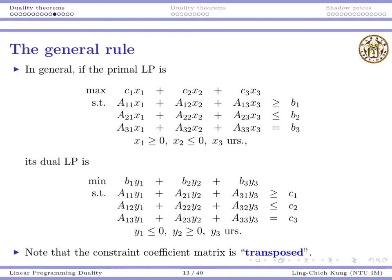In general, if we have a primal program with all kinds of constraints and all kinds of variables, then the dual variables can be formulated according to the primal problem. For greater than or equal to constraints, you have non-positive variables, and so on. For non-negative primal variables, you have greater than or equal to dual constraints. The dual program is constructed from the primal program.